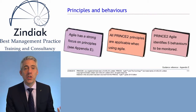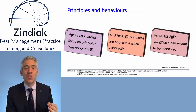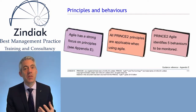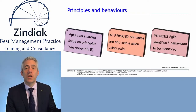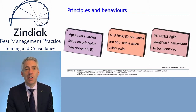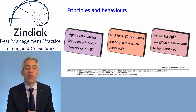All the PRINCE2 principles are applicable when using Agile — that doesn't change. PRINCE2 Agile identifies five more behaviours to be monitored, so it's really just expanding on the principles, and to differentiate the two, it's referring to them as behaviours. We'll go through the seven PRINCE2 principles with guidance on how to apply them in an Agile environment, and then we'll go through the five additional PRINCE2 Agile behaviours.